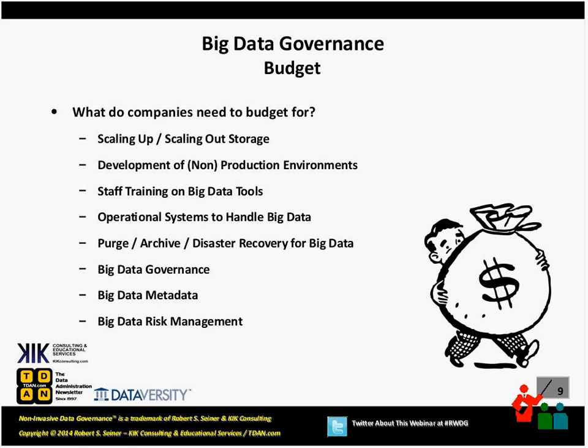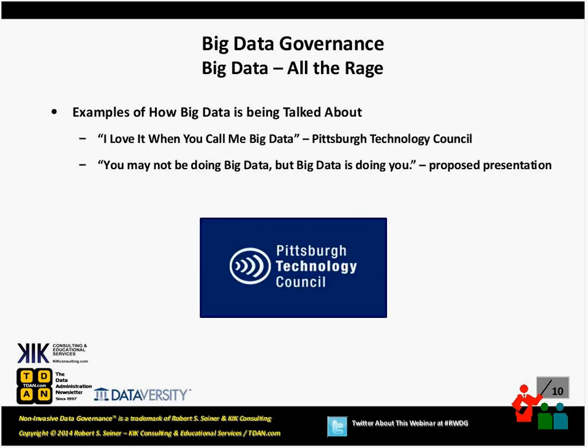Here are what companies typically are budgeting for: scaling up and scaling out storage, development of non-production and production environments around their big data. They're budgeting for staff and training on big data tools that are going to be new to their environment, operational systems, and the purging, archiving, and disaster recovery for big data. But a lot of organizations thinking about data governance don't necessarily put those items at the top of their priority list. I'm also going to spend a moment talking about big data metadata, and all the rules associated with risk management for all other data in our organization apply to big data as well.